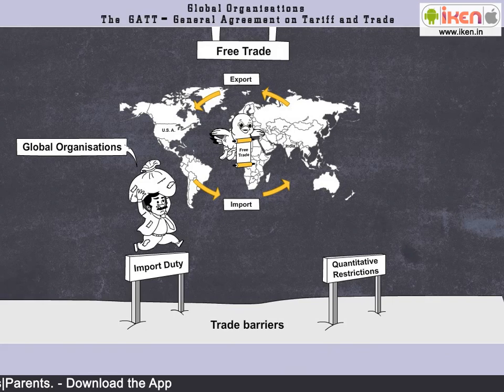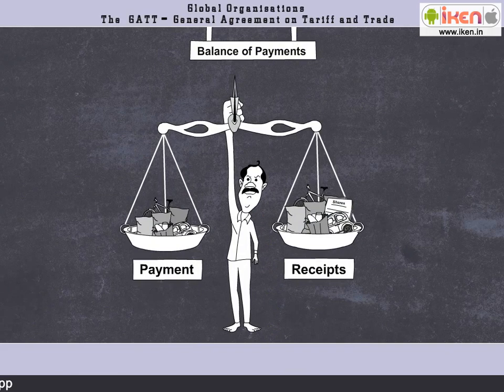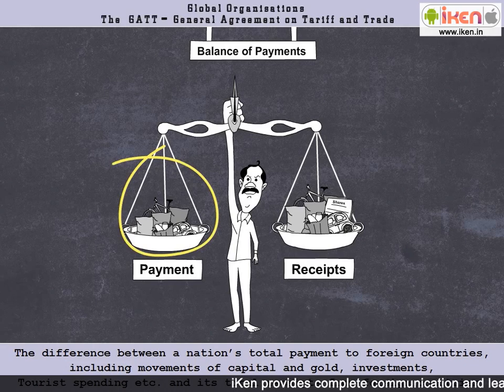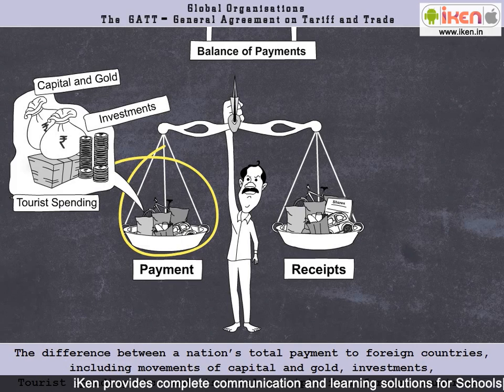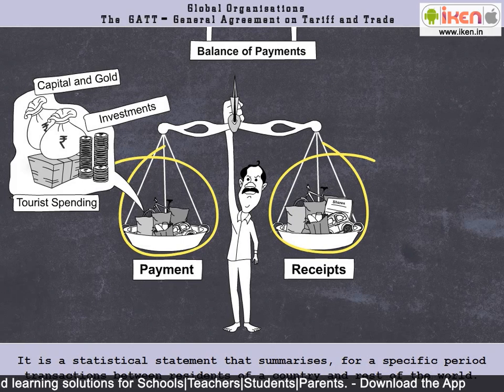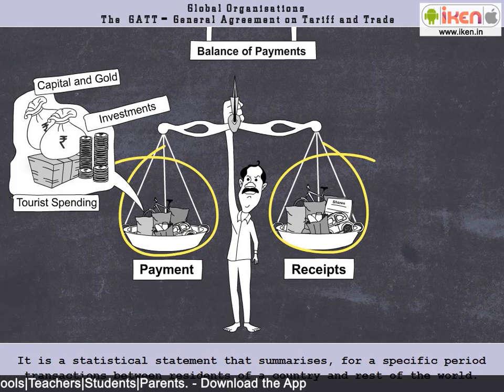Before we move ahead, let us understand the term Balance of Payments in greater detail. The difference between a nation's total payment to foreign countries — including movements of capital and gold, investments, tourist spending, etc. — and its total receipts from foreign countries. It is a statistical statement that summarizes, for a specific period, transactions between residents of a country and the rest of the world.